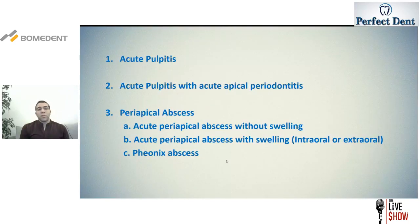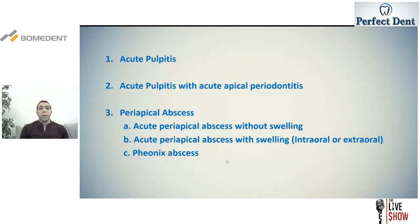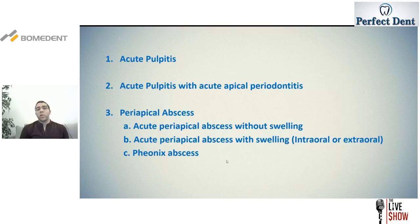Today we're going to talk about various clinical scenarios involving endodontic emergencies, including acute pulpitis, acute pulpitis with acute apical periodontitis, periapical abscess — including acute periapical abscess without swelling, acute periapical abscess with swelling (whether intraoral or extraoral) — and lastly, the phoenix abscess.